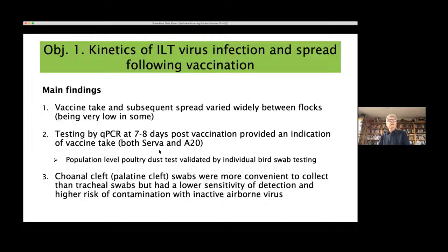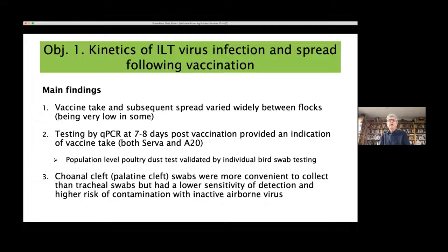We showed that testing of either swab samples or dust at seven to eight days post-vaccination gave a pretty good indication of whether vaccination had been adequate. Those experiments were done with both the server vaccine and A20 in field studies. We compared population-level poultry dust testing with individual bird swab testing, which is not a practical or economical way of monitoring this disease. The work showed that choanal cleft swabs were more convenient to collect but had lower sensitivity than deeper tracheal swabs, and we suspected some contamination with inactive airborne virus lodging in the choanal cleft.